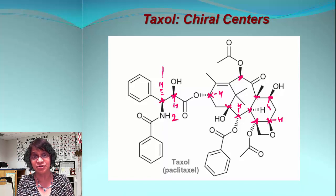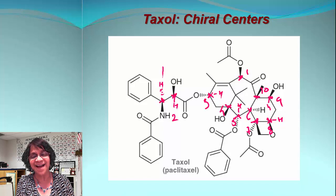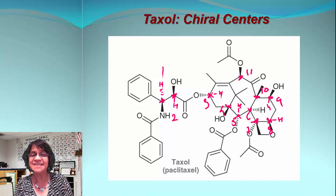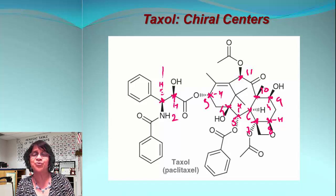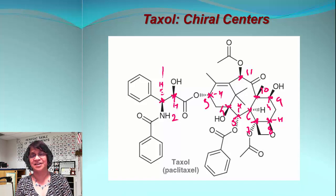Let's count: that is one, two, three, four, five, six, seven, eight, nine, ten, and eleven. And that is correct — Taxol has eleven chiral carbon atoms. That makes it very unique, and it is very challenging to actually synthesize this compound in the lab.